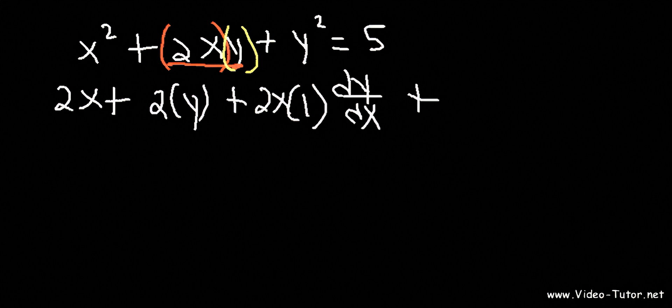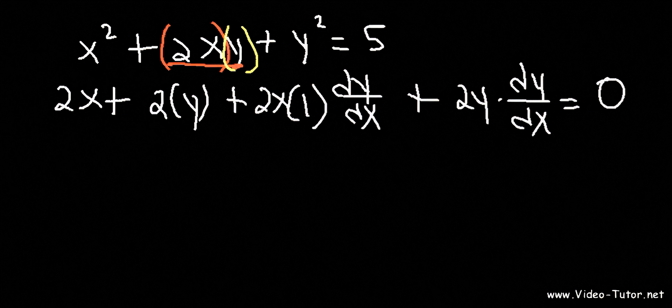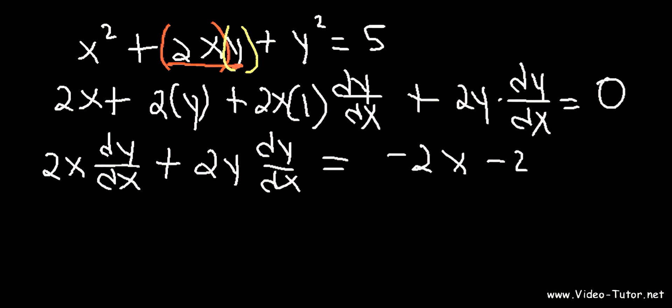So here we have y squared next. The derivative of y squared is 2y times dy/dx. And the derivative of any constant is always 0. So now our goal is to isolate dy/dx. Any term that doesn't have a dy/dx, we're going to move it to the right side.